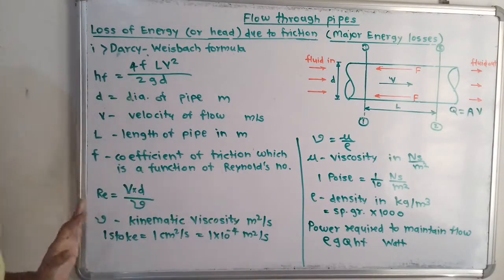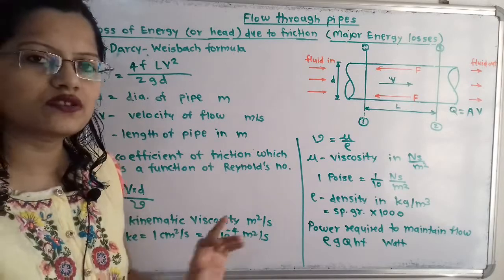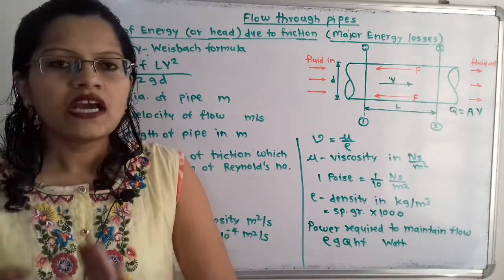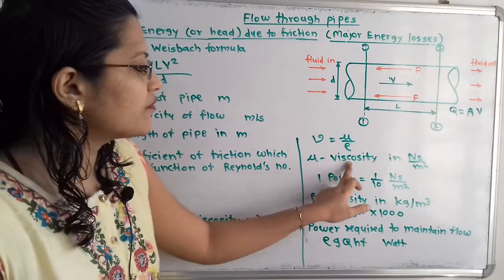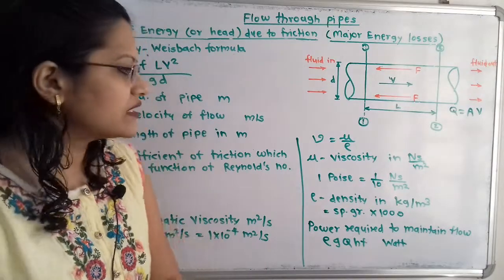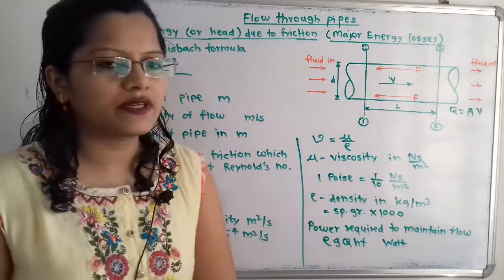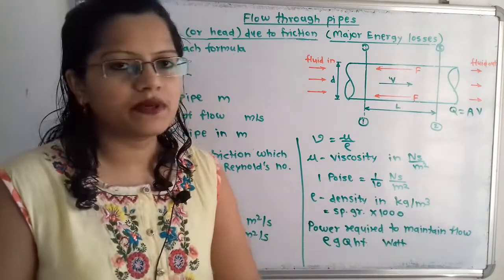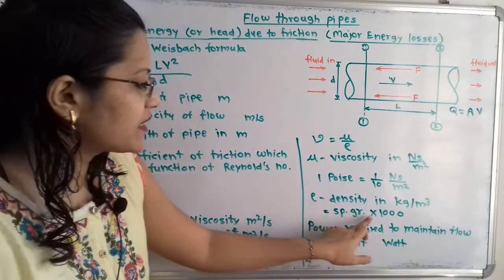The standard unit of kinematic viscosity is m²/s. Sometimes kinematic viscosity is given in stokes: 1 stoke = 1 cm²/s, which equals 1 × 10⁻⁴ m²/s. Kinematic viscosity ν = μ / ρ, where μ is dynamic viscosity in N·s/m². Sometimes viscosity is given in poise: 1 poise = 1/10 N·s/m². The density ρ of fluid has units of kg/m³. When specific gravity is given, density = specific gravity × 1000.